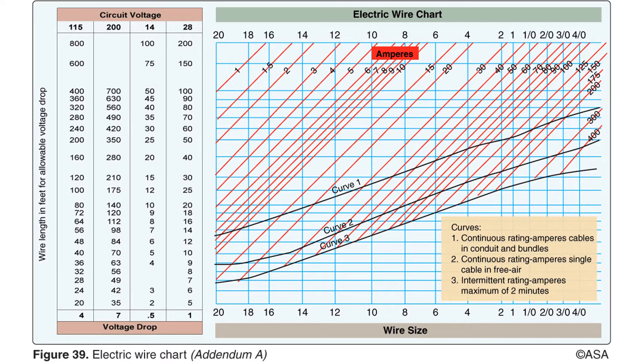In the previous example, we found the correct wire gauge for a given length of wire with a particular current flow. It did not matter whether the wire was run in a conduit or bundled with other wires, or whether it was a single wire running in free air, because the intersection point of the lines for the current and wire length were above curve 1. In this next example, we will show how to determine the correct wire gauge for a wire run in conduit when the lines for wire length and current intersect below curve 1.